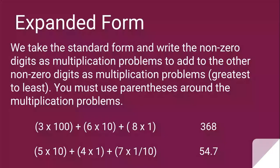But now we're going to be working on expanded form. That's when we take the standard form and write the non-zero digits as multiplication problems to add to the other non-zero digits as multiplication problems. We do this from greatest to least. You must use parentheses around the multiplication problems. If you don't put the parentheses in the right spot, you're going to have a completely new problem.